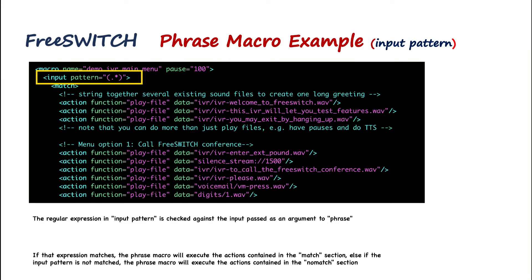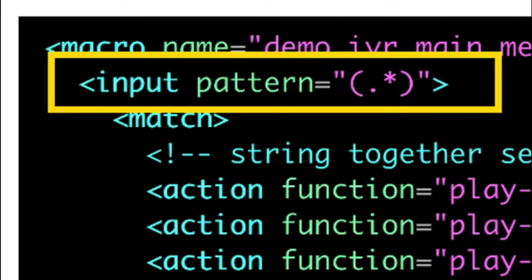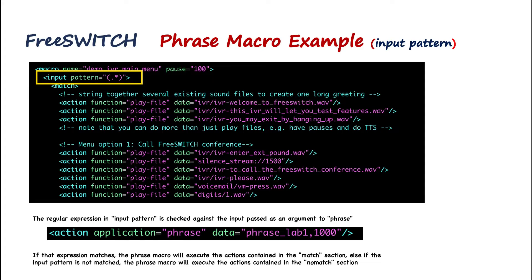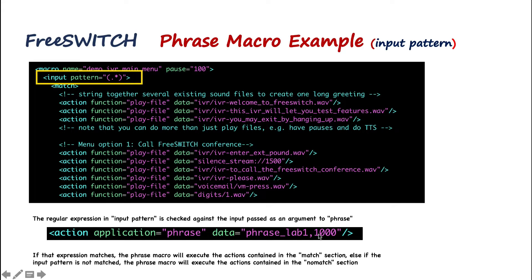The regular expression in the input pattern is checked against the input passed as an argument to the phrase. For example, in our dial plan we called the phrase and passed 1000 as input; that will be checked against the input pattern. If 1000 matches, the phrase macro executes the actions in the match section. If the input pattern is not matched, the phrase macro executes the actions in the no-match section.